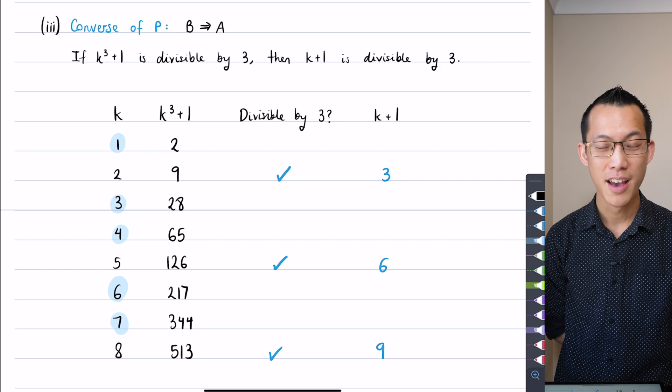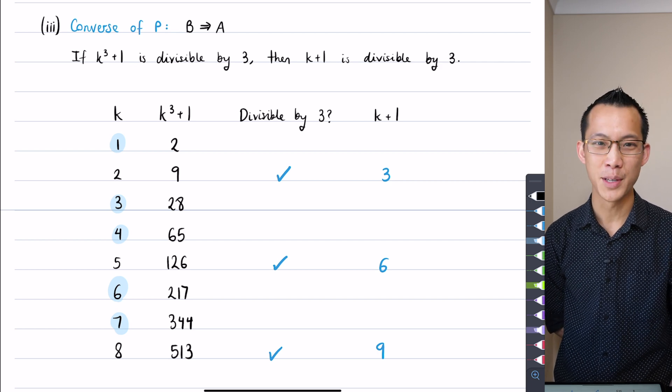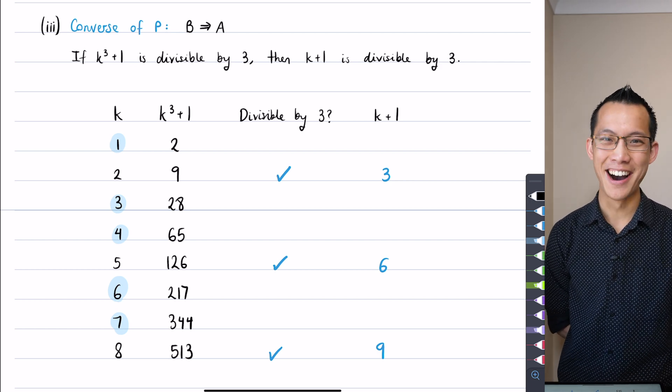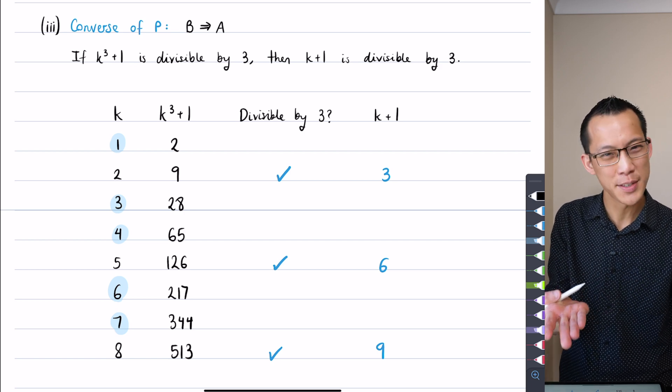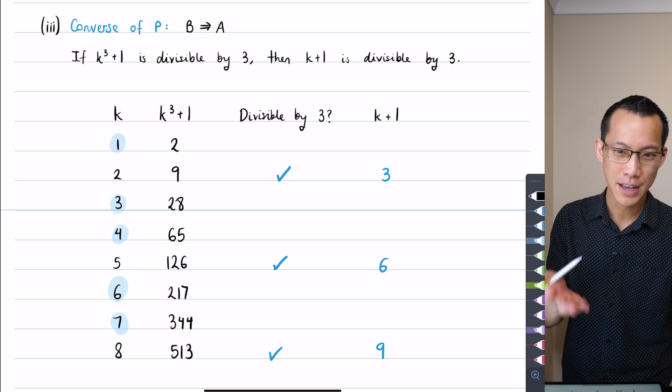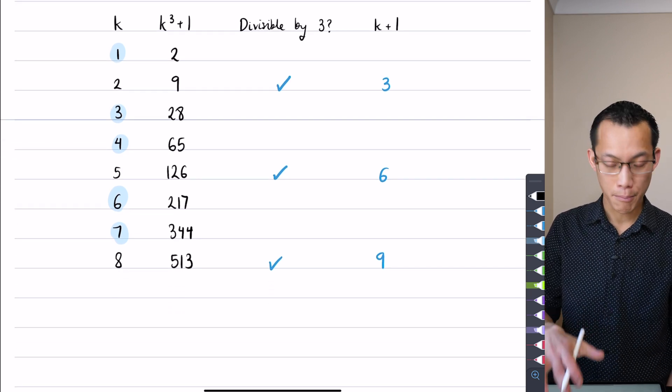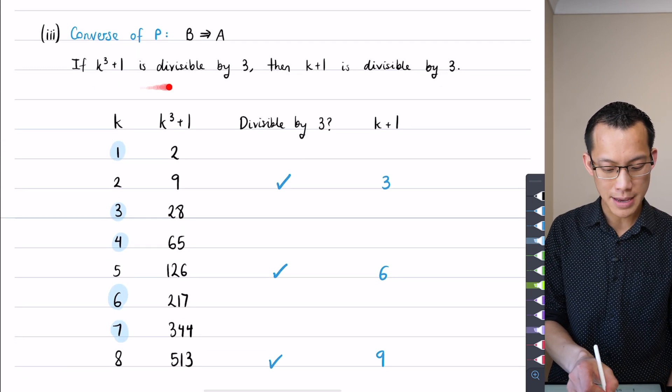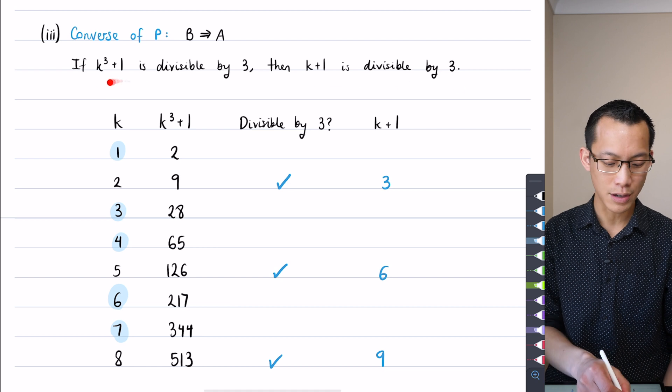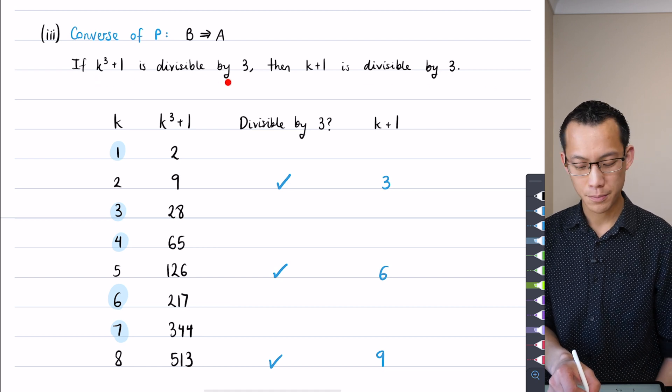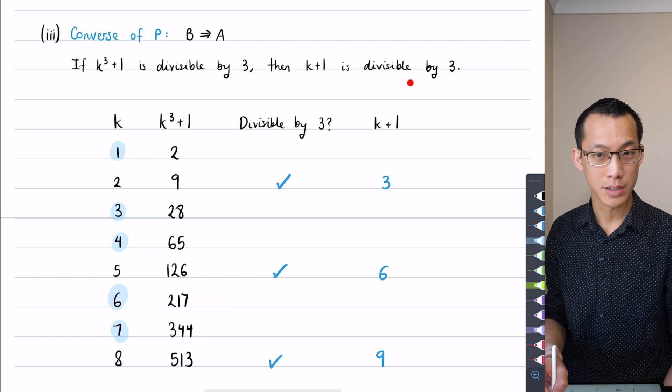Now I haven't obviously gone very far, only tested eight numbers. This is certainly not a proof, but it's a helpful indicator that the converse is probably true. It would be enormously sadistic to give something that breaks after hundreds or thousands of numbers in the context of a time pressured exam.